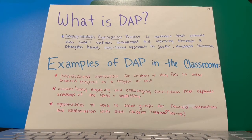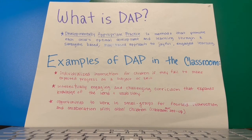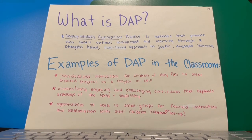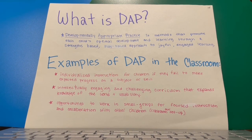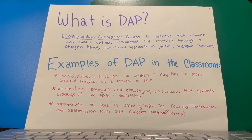DAP connection: what is DAP? DAP stands for developmentally appropriate practice, which is methods that promote each child's optimal development and learning through a strengths-based, play-based approach to joyful, engaged learning. Examples of DAP in the classroom include individualized instruction for children who fail to make expected progress on a subject or skill, intellectually engaging and challenging curriculum that expands knowledge of the world and vocabulary, and opportunities to work in small groups for focused instruction and collaboration — which is a focus of our classroom setup.